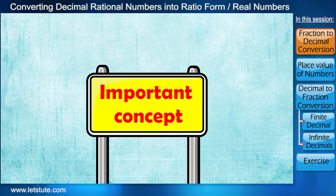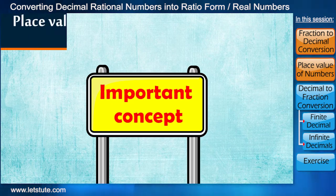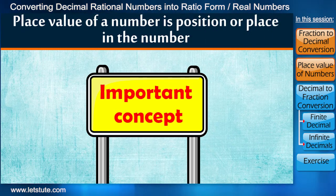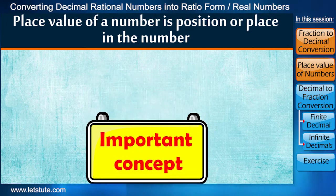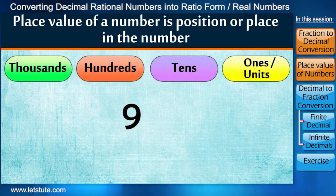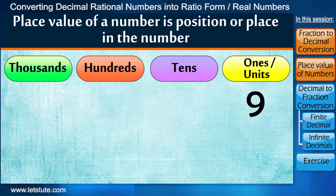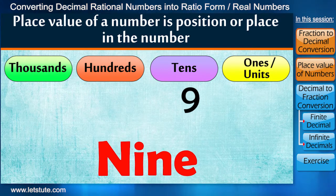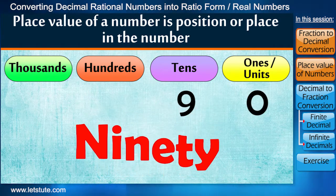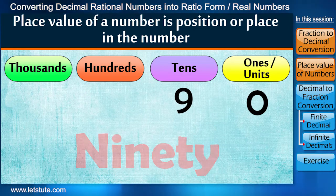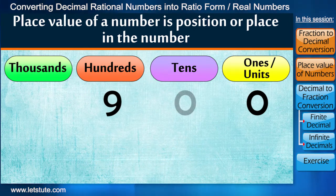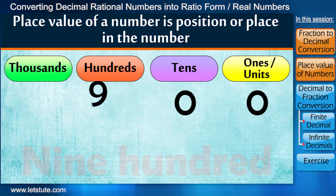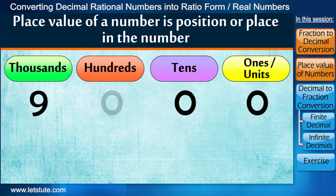We know that the value of a number depends on its position or place in the number. For example, let's take a number, say 9. If 9 is at units place then it's just 9. When it gets shifted to the tens place then its value is 90. If it is at hundreds place then it will have value 900, and at thousands place it holds value 9000.